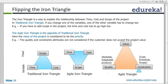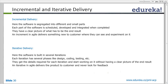Although constraints could be cost and scope, when the customer is involved throughout the lifecycle of the project, they would appreciate why cost might increase. This is called the flipping of the triangle. Now we move on to incremental and iterative delivery.